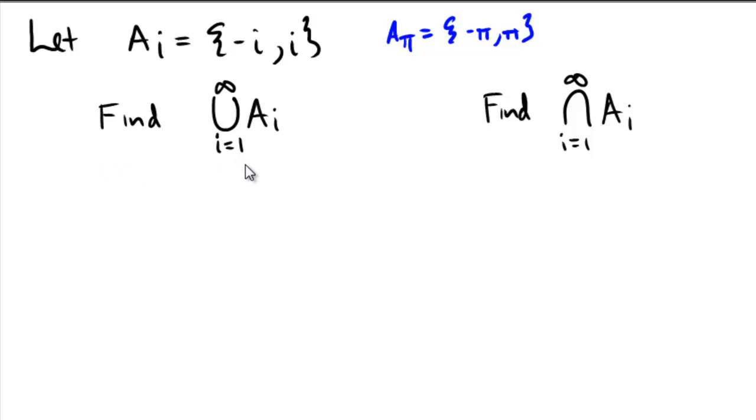On the left it says find the union of all the a i's. So if we write out a few of these sets, I wrote out one example with the pi, but now we're indexing over natural numbers. This is understood to mean 1, 2, 3, 4, much like sigma notation.